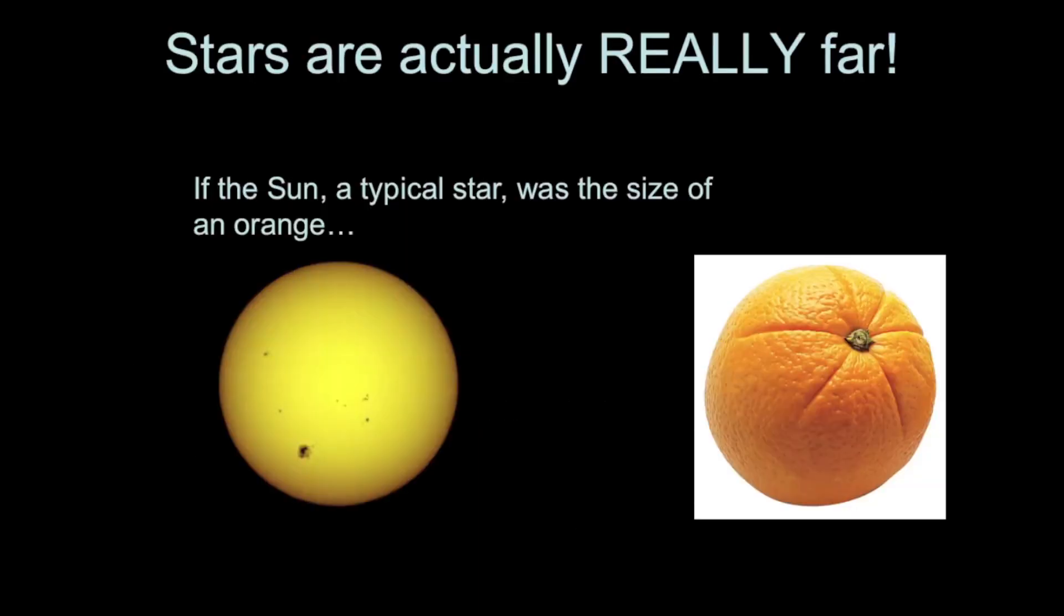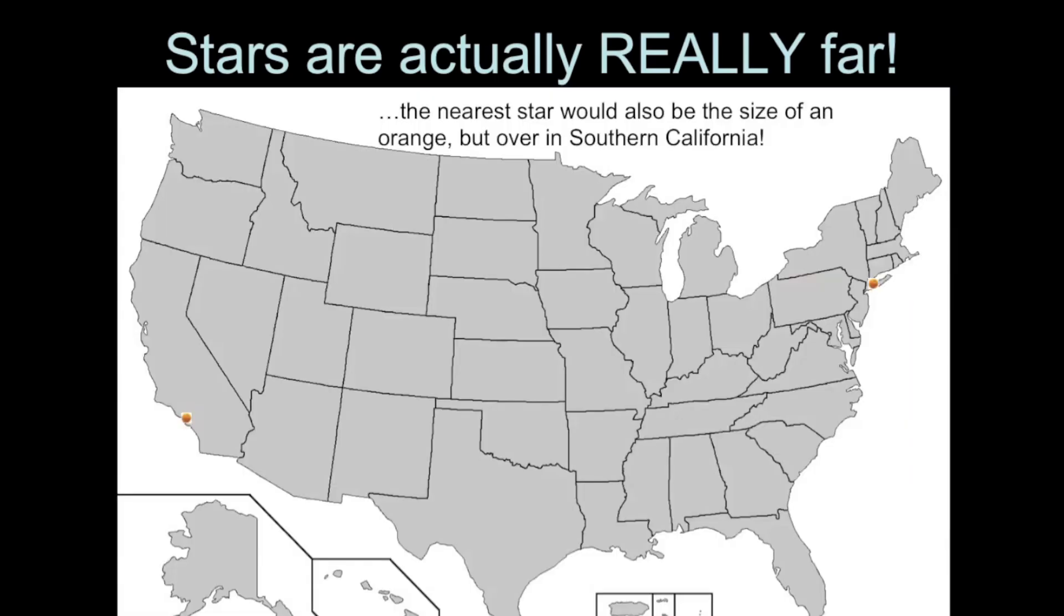It turns out that stars are actually really far away. For example, if the Sun, which is a typical star, was the size of an orange, and we placed that orange in New York, the nearest star would be also the size of an orange, but it would be over in Southern California.